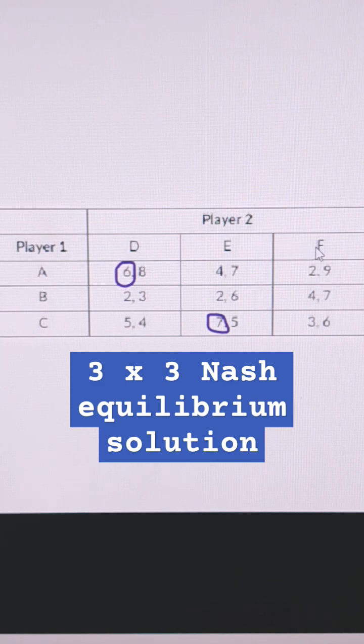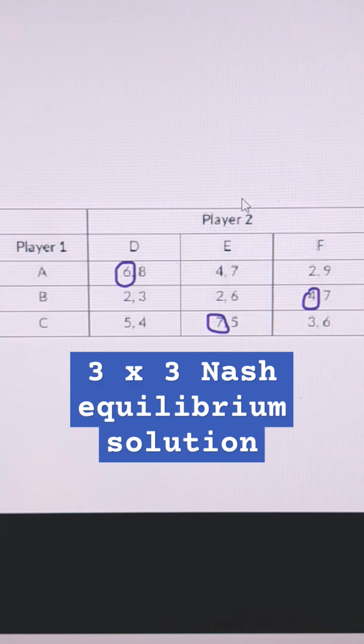If Player 2 does F, what should Player 1 do? They should choose B. That's the best response from Player 1. They're going to choose all of their choices, so nothing is dominated or eliminated.